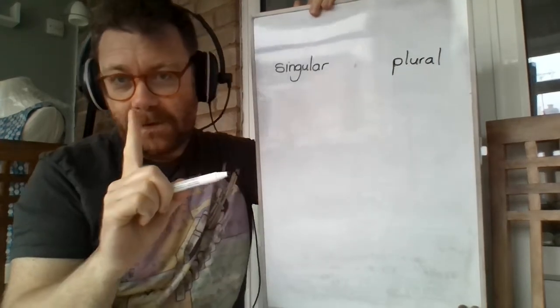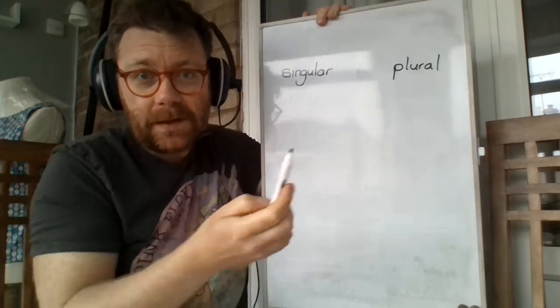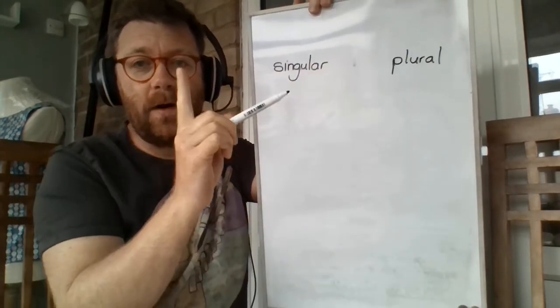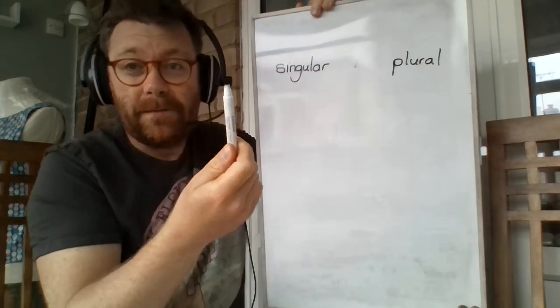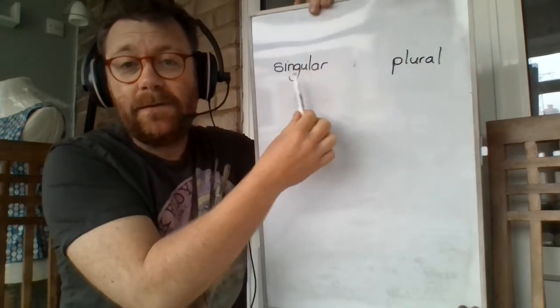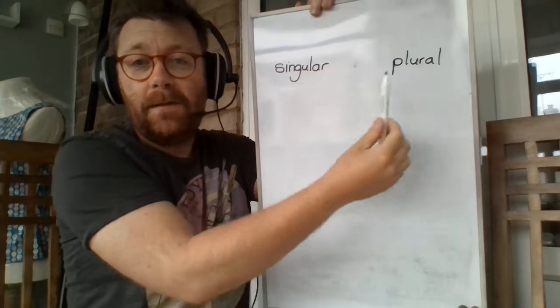Singular means when there's only one of something. It's single, it's on its own. So singular is just one of something. Plural means more than one. That's all you need to know. So single, just one. Plural, more than one.